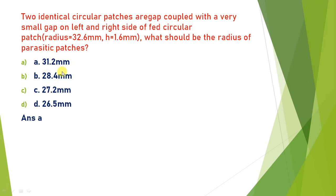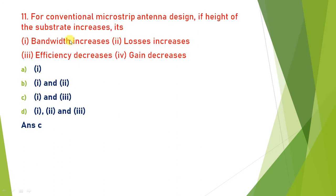For a conventional microstrip antenna design, if the height of the substrate increases, bandwidth increases. However, as bandwidth increases, gain decreases, and if gain decreases then efficiency also decreases. Options one, three, and four are correct, but only options one and three are given together, so the answer is C.